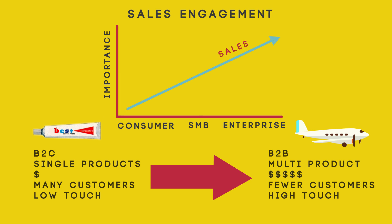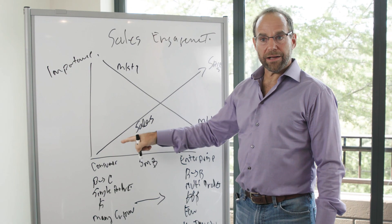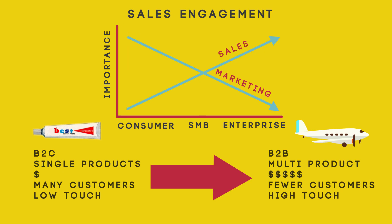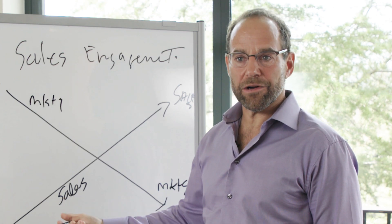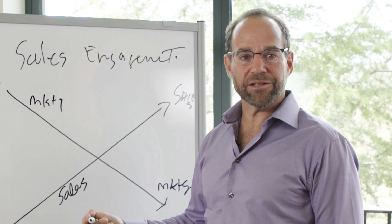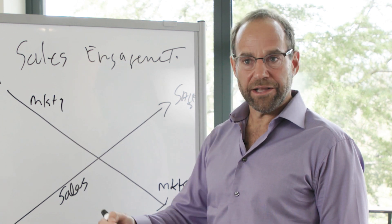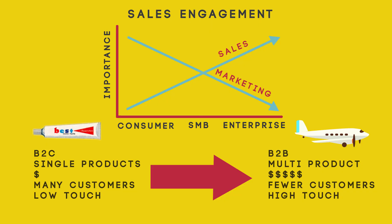There's a sales line and a marketing line showing how much money and importance is placed on each. If you have a consumer-oriented product, the investment in marketing will likely be much greater than sales. There's no need for a direct salesperson on a drugstore aisle selling each user a tube of toothpaste. So in the consumer space, companies spend a lot on marketing and very little — if not zero — on sales.